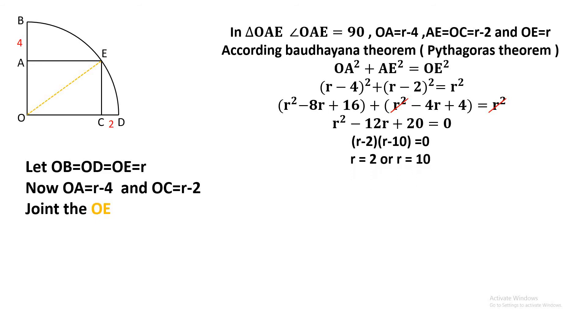But for r = 2, OC will be 2 - 2 = 0, and OA will be 2 - 4 = -2. That's not possible. That's why we take r = 10.